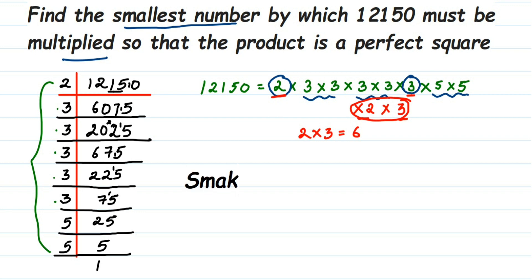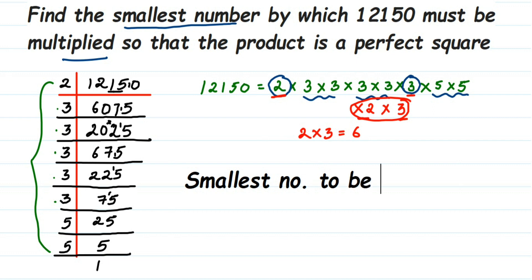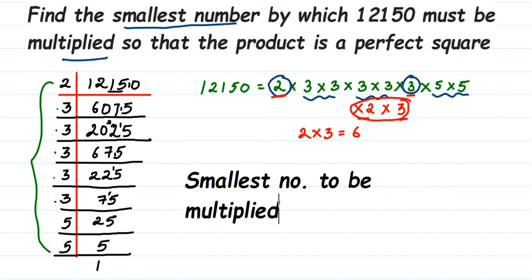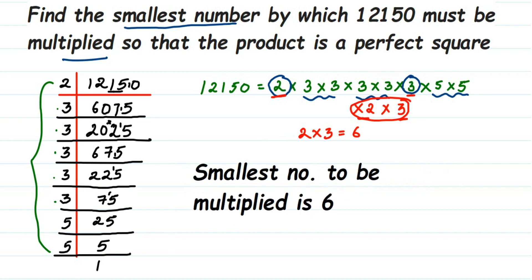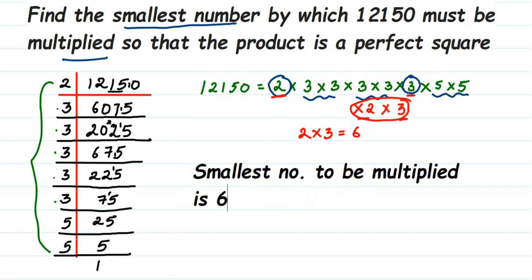It's a very simple concept — we just look for the factors which are not paired, and those are the numbers to multiply. If there's a single unpaired number, that's the answer. If there are two unpaired numbers like 2 and 3 here, we multiply them: 2 × 3 = 6. So six is the smallest number to be multiplied. I hope this question is clear — if you have any other questions or doubts, you can drop a comment. Thank you so much for watching.